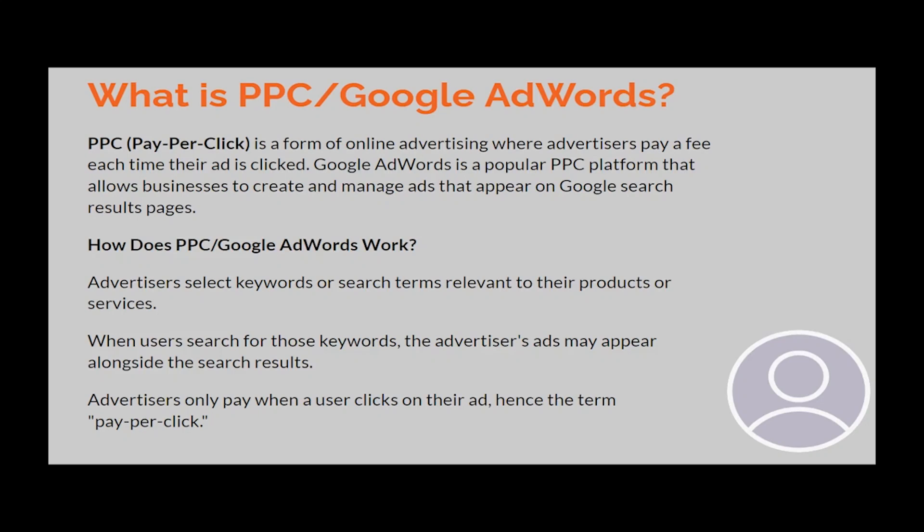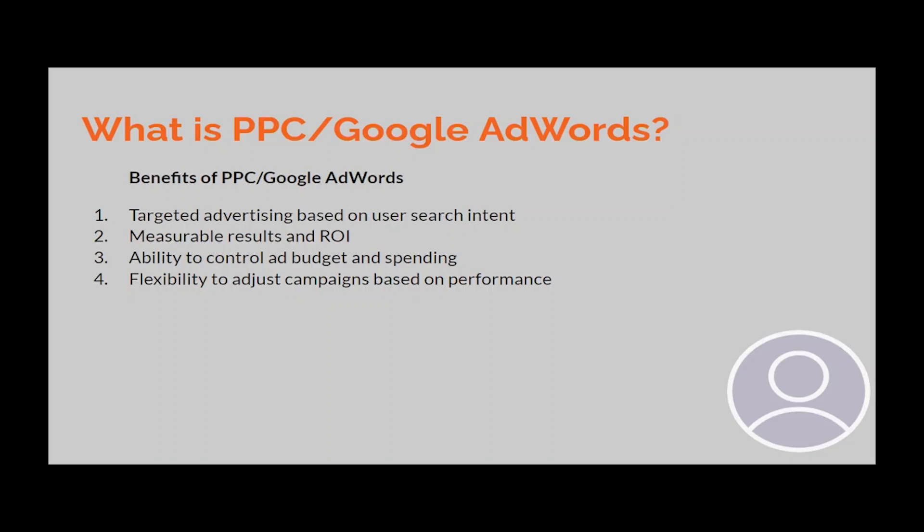You're able to select keywords or search terms that are relevant to your products or services. When users search for those keywords on Google or in a search engine, your ad appears alongside the search results. When users click on your ads, you pay for the ad — hence the term 'pay-per-click.'